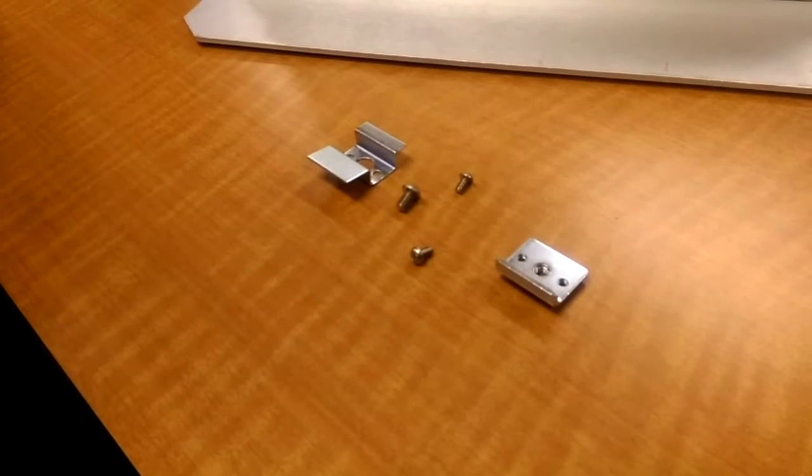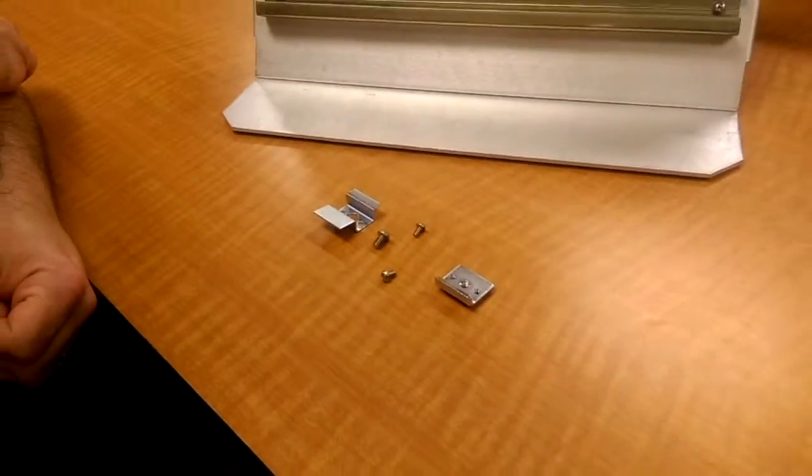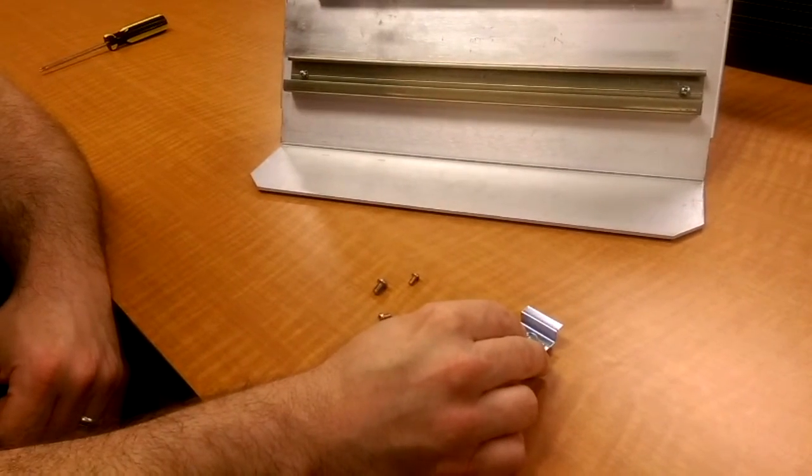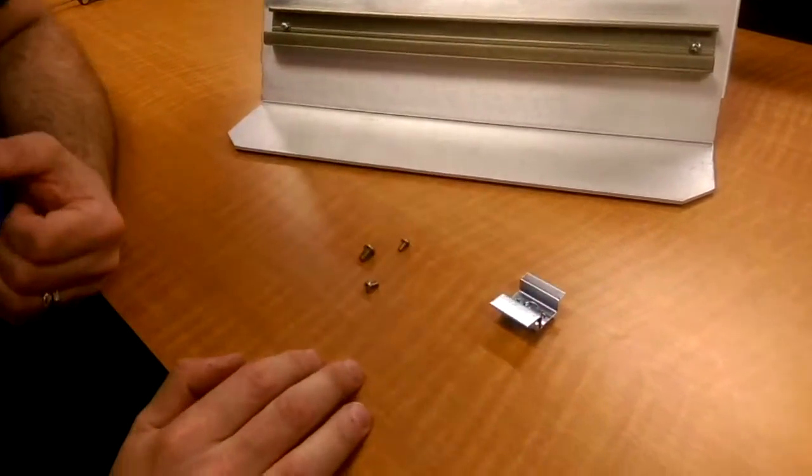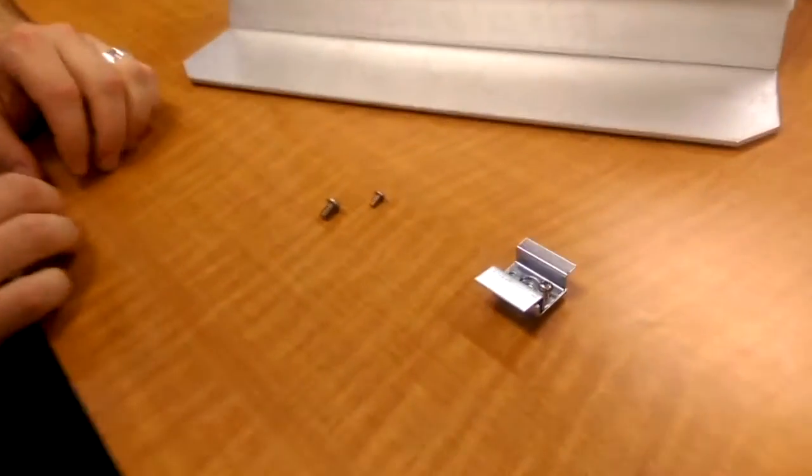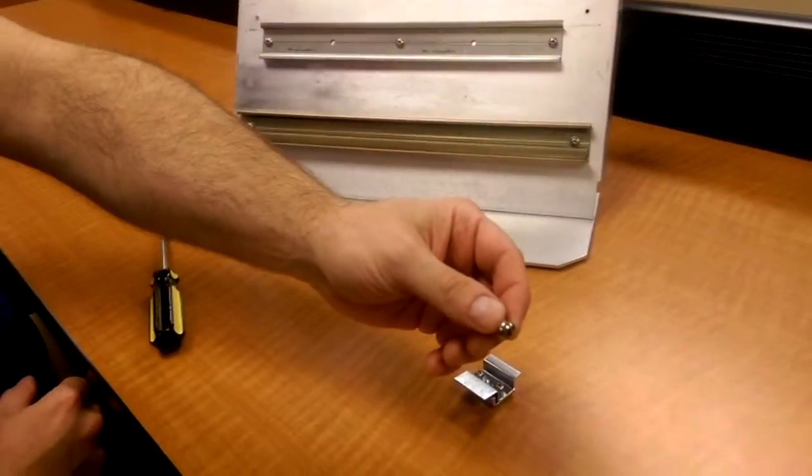All you need is a Phillips head screwdriver and the parts from the DIN rail adapter kit. First, place the two pieces of the DIN rail adapter together with the larger piece on top. Next, insert the two smaller screws on either side and the larger screw in the middle.